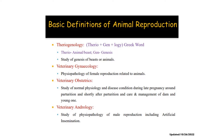These are the important terminologies under animal reproduction. We have theriogenology, which is the study of the genesis of animals. We also have veterinary gynecology, which refers to the study of the physiopathology of female reproduction related to animals. Veterinary obstetrics is the study of normal physiology and disease conditions during late pregnancy, around parturition, and shortly after parturition, and care and management of the young one. Veterinary andrology is the study of the physiopathology of male reproduction, including artificial insemination. All of these are under the field of theriogenology.